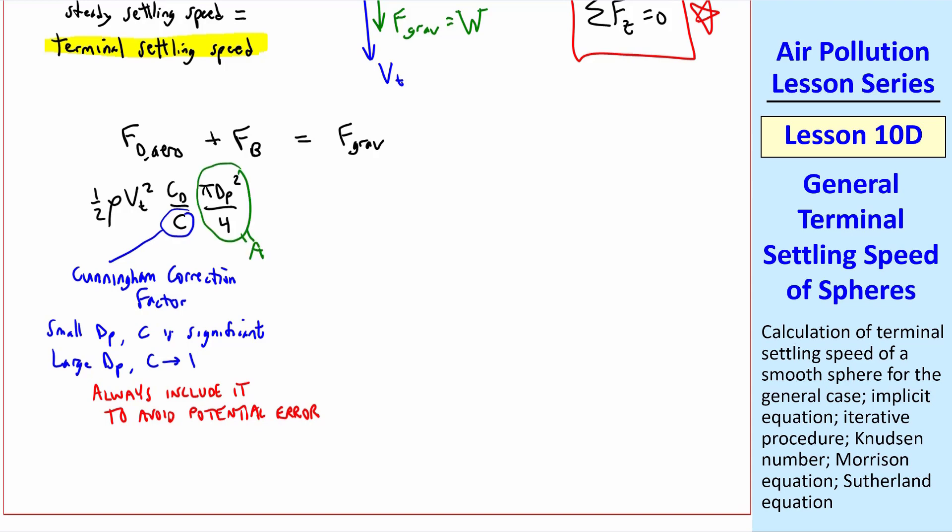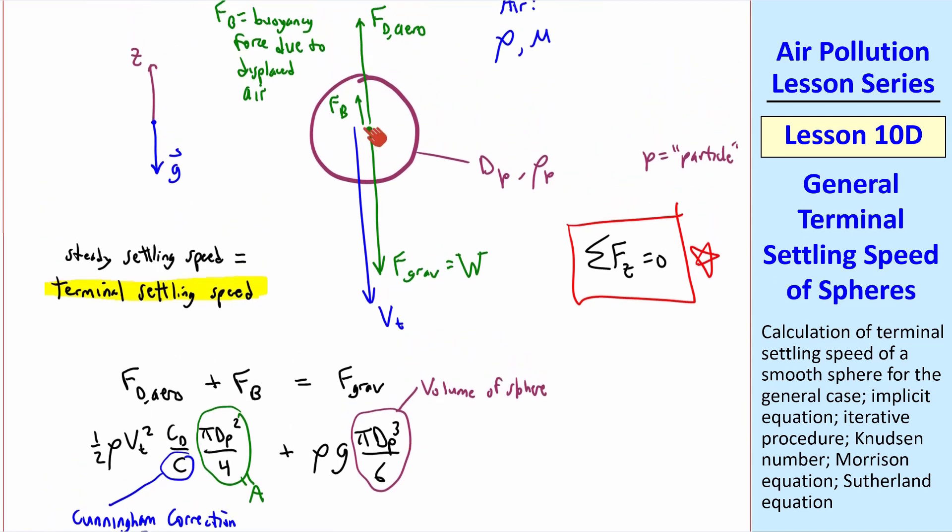This is the projected frontal area of the sphere. The buoyancy force is the density of the air times g times πdp³/6, which is the volume of the sphere. This term is the displaced weight of the air, which acts as a buoyant force upward.